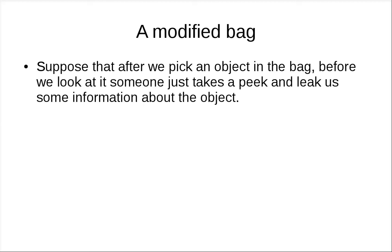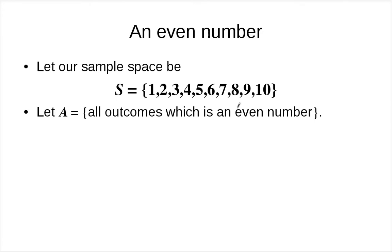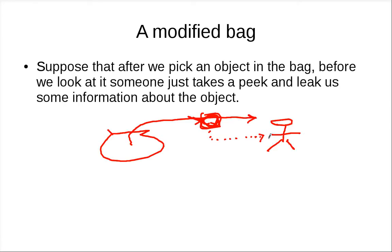Now we'll look at a modified situation. Previously we had a bag and we pick something from the bag and take a look. But now suppose someone came here and looked at the object for us first, and then some information is leaked to us — before we see the outcome, we hear something from this person. So that's the situation: someone leaks some information to you before you see the actual outcome.